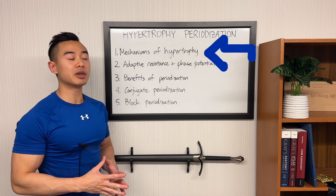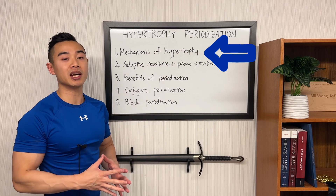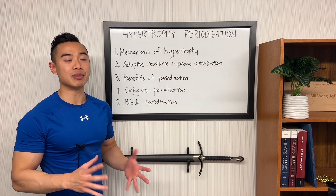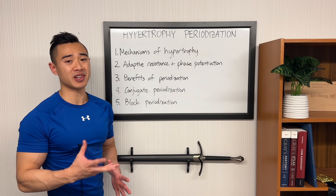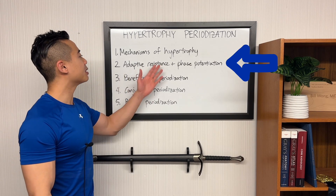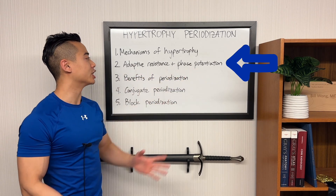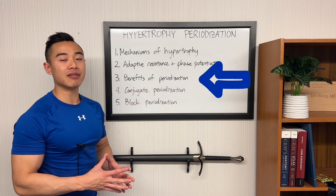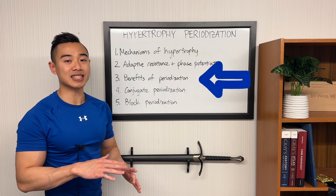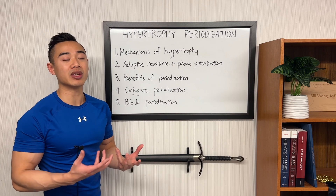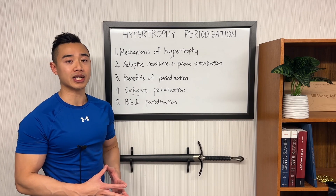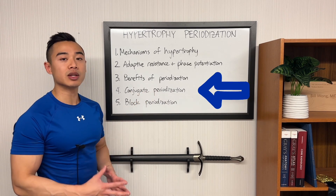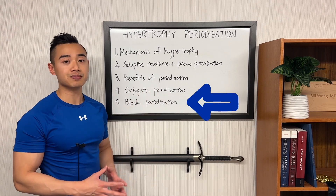We'll start off by talking about the mechanisms of hypertrophy because this will inform a lot of our discussion. Next we'll talk about a couple of the drivers that make us think about periodization — in particular adaptive resistance and phase potentiation. Then we'll talk about the benefits of periodization for bodybuilders, and finally we'll give some concrete examples of how you can implement periodization in your own training strategy. The first strategy we'll talk about is conjugate periodization, and then we'll talk about block periodization.